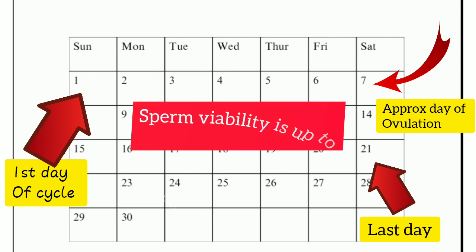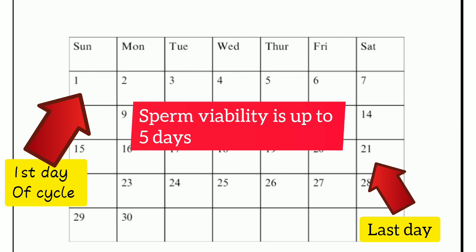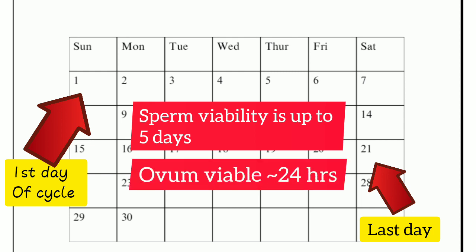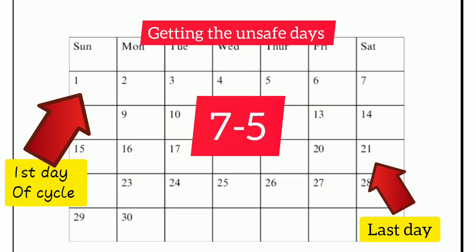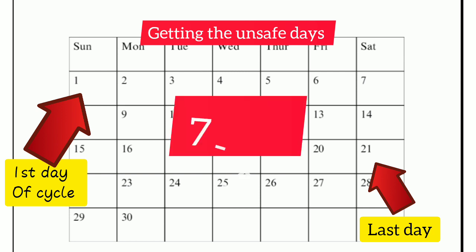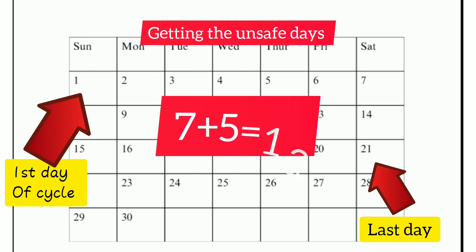Remember that male sperm usually lasts for around 5 days in the female reproductive tract. And after ovulation, the ovum may survive for roughly 24 hours. So you calculate 7 minus 5, which gives you 2, and 7 plus 5, which gives you 12.